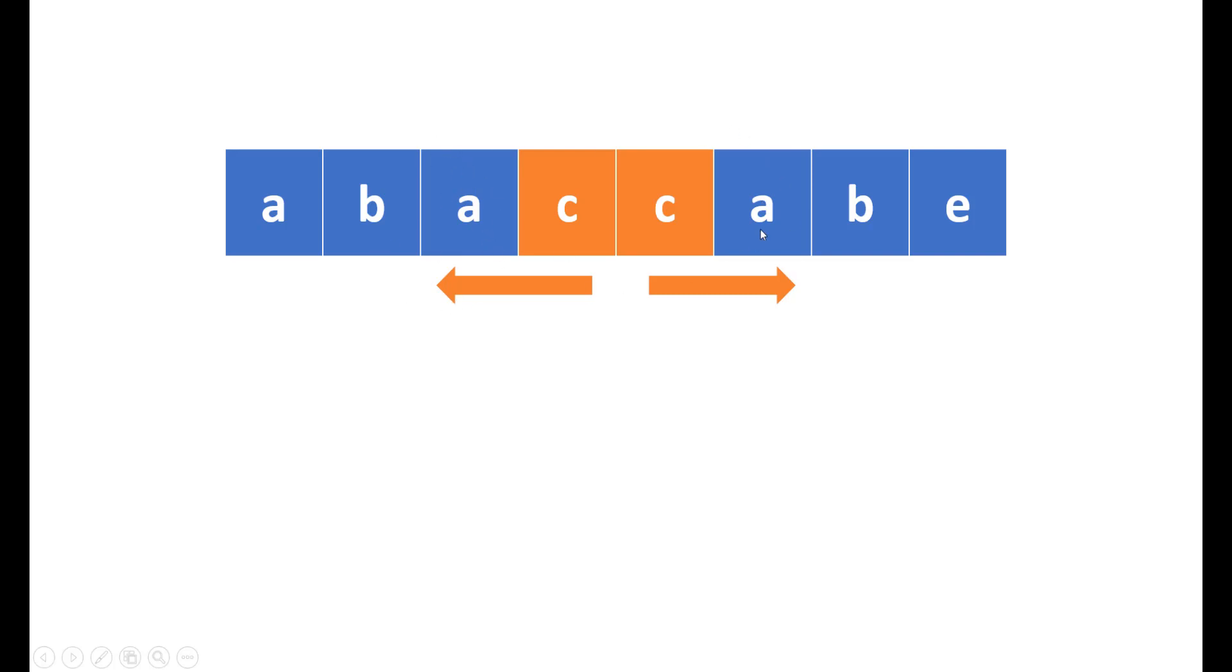Again, when you travel one step ahead, you get B and B over here which are also equal. So you can say that this whole chunk is a palindrome. Now when you go ahead, you will get A and E which are not equal and thus your palindrome condition fails. And thus you can say that only this middle part is a palindrome.